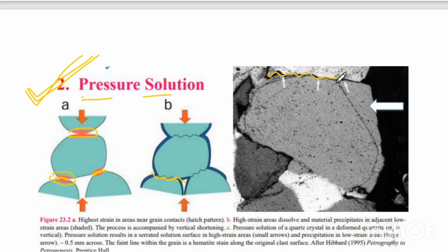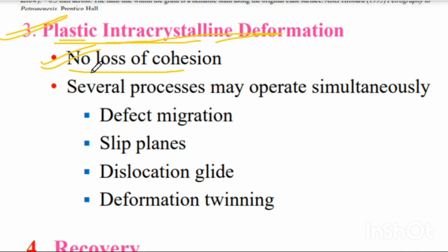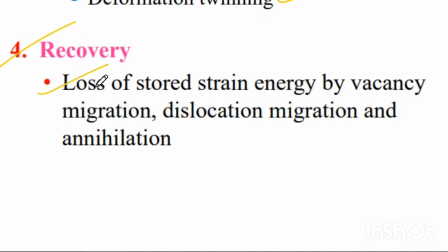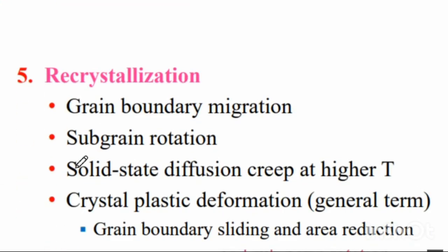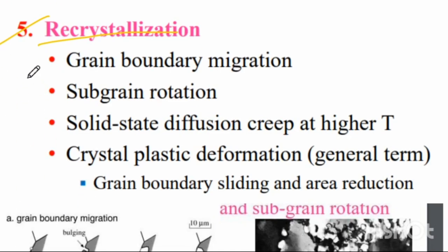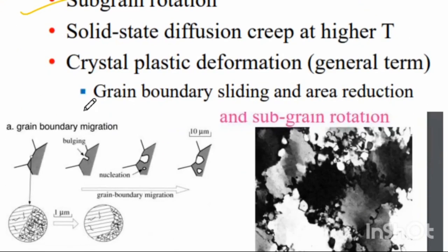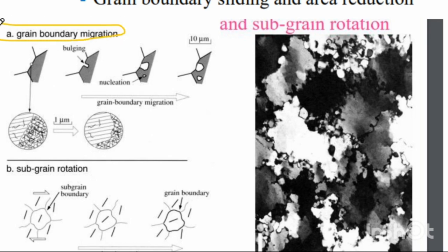The third process is plastic intracrystalline deformation — no loss of cohesion; defect migration, slip planes, and dislocation glide are common. The fourth is recovery — loss of stored strain energy by vacancy migration, dislocation migration, or annihilation. The fifth is recrystallization — grain boundary migration or sub-grain rotation occurs; solid-state diffusion and crystal-plastic deformation are common. In grain boundary migration, a bulging occurs and with diffusion the grain grows bigger in size.